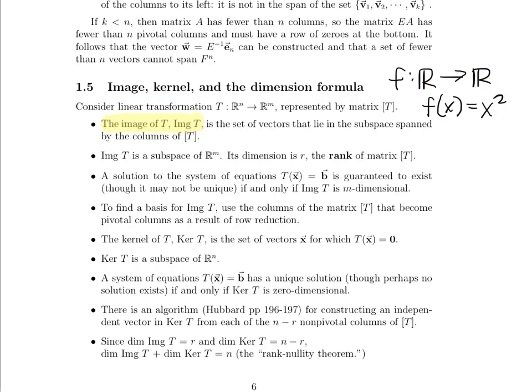When you look at the actual function f(x) = x², the possible outputs are never negative since we're squaring real numbers. So the image of this function is all real numbers greater than or equal to zero. The codomain is all of R, but the image is only the non-negative reals. That's how the image is a subspace of R^m — it lives in R^m but may not be the entire space. To find the image, look at each column of T as a vector and consider all possible linear combinations of that set.